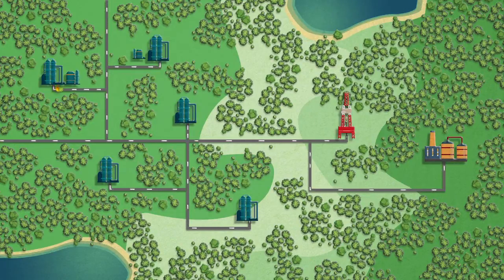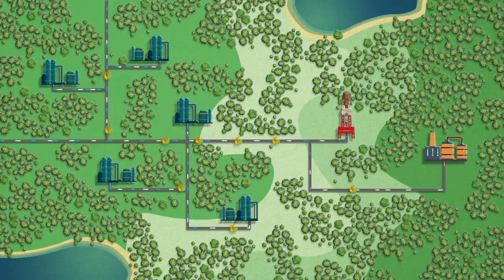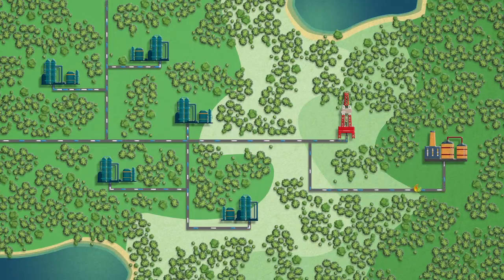By installing biomass gasifiers alongside existing pipelines, renewable natural gas could be sent to the oil sands for immediate use in an efficient and cost-effective way.